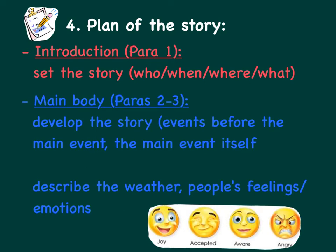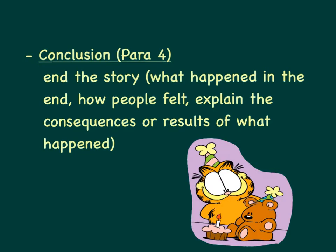The main body should be in paragraphs 2 and 3. You can develop the story here, like writing the events before the main event, and the main event itself. You can also describe the weather, people's feelings or emotions as well. The conclusion should be in paragraph 4 or the last paragraph to end the story.